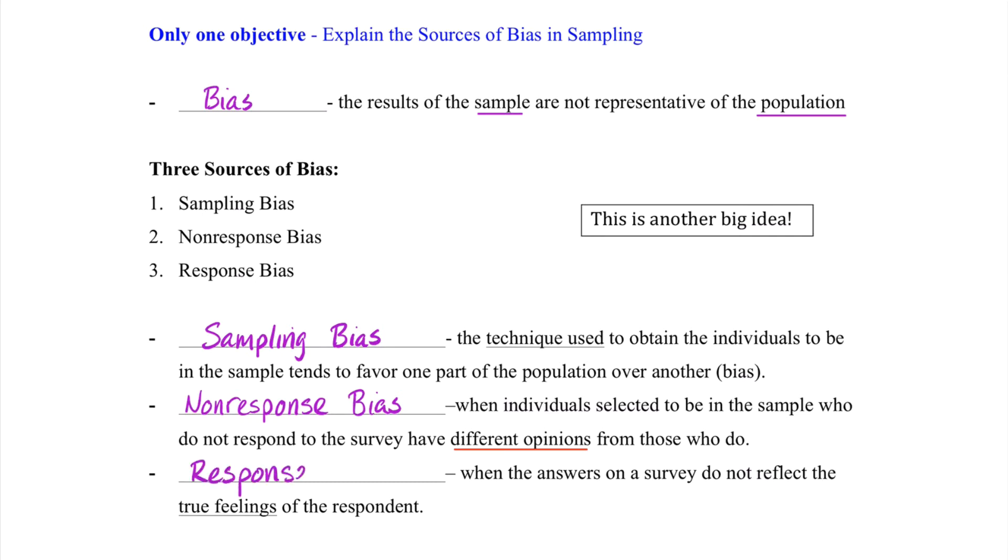And third, we have response bias. Now this happens when the answers on a survey do not reflect the true feelings of the respondent. This is a scenario where we're asking people questions and they feel like they're not able to respond truthfully, or for whatever reason they do not respond truthfully. Therefore, we end up with a bias because our sample results don't represent the population.